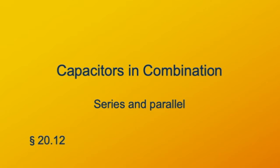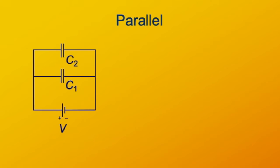We can use Kirchhoff's circuit rules to help us understand how capacitors behave when they're combined with each other, for instance in series and in parallel. Let's look at parallel first. When capacitors are in parallel, by Kirchhoff's voltage rule, both of them are at the same voltage.